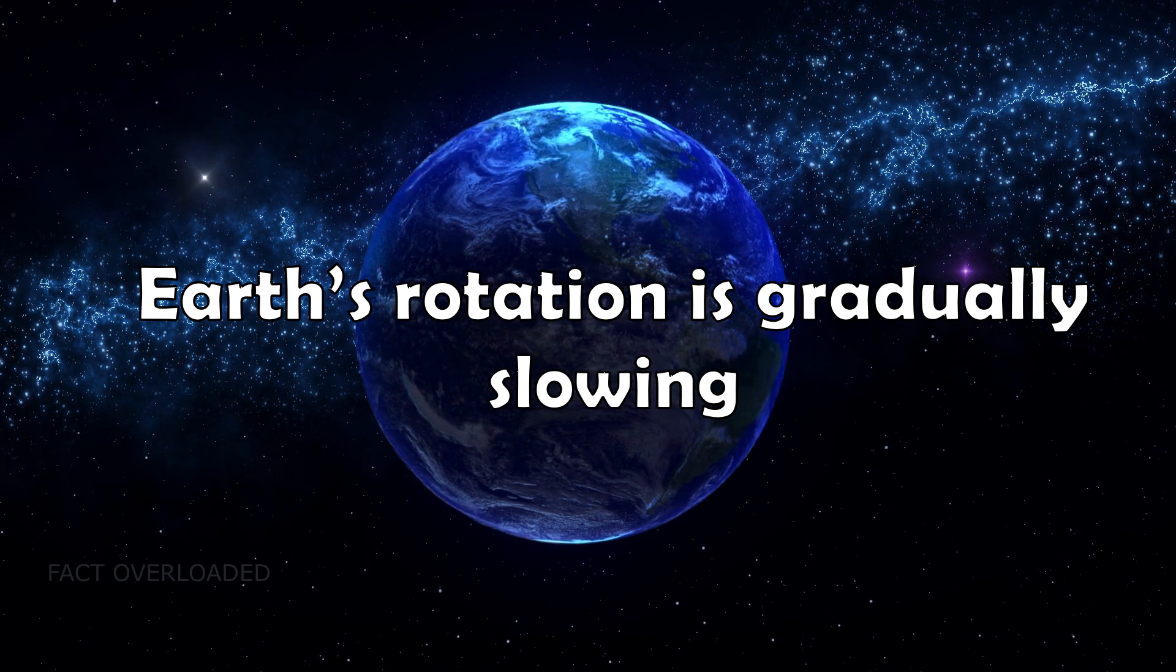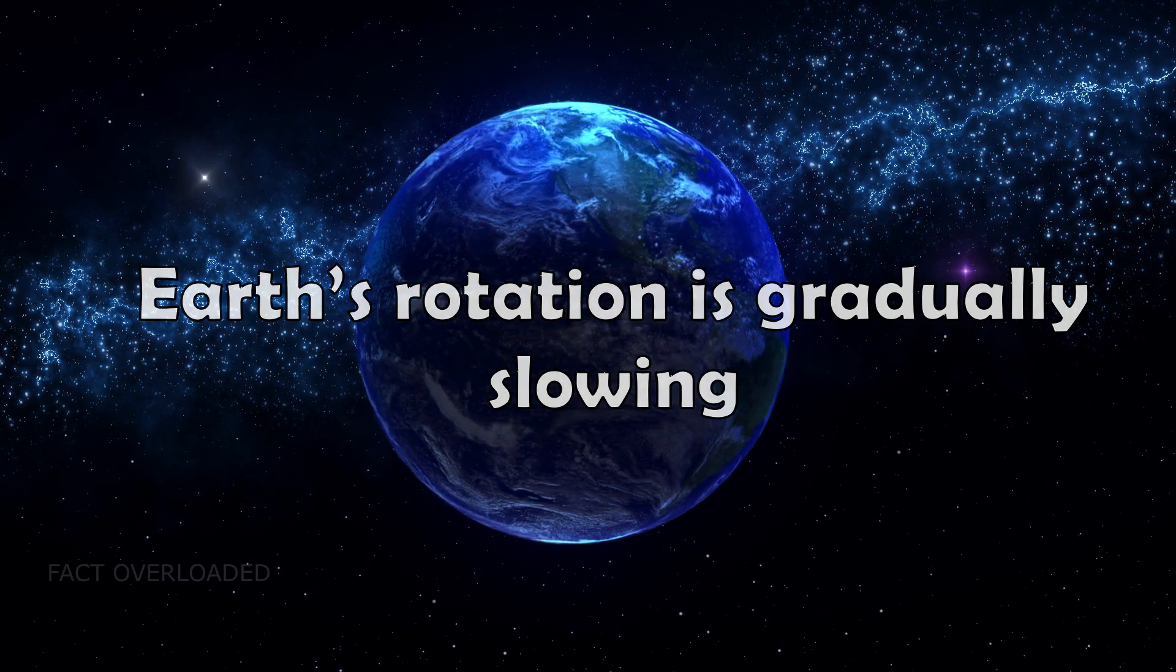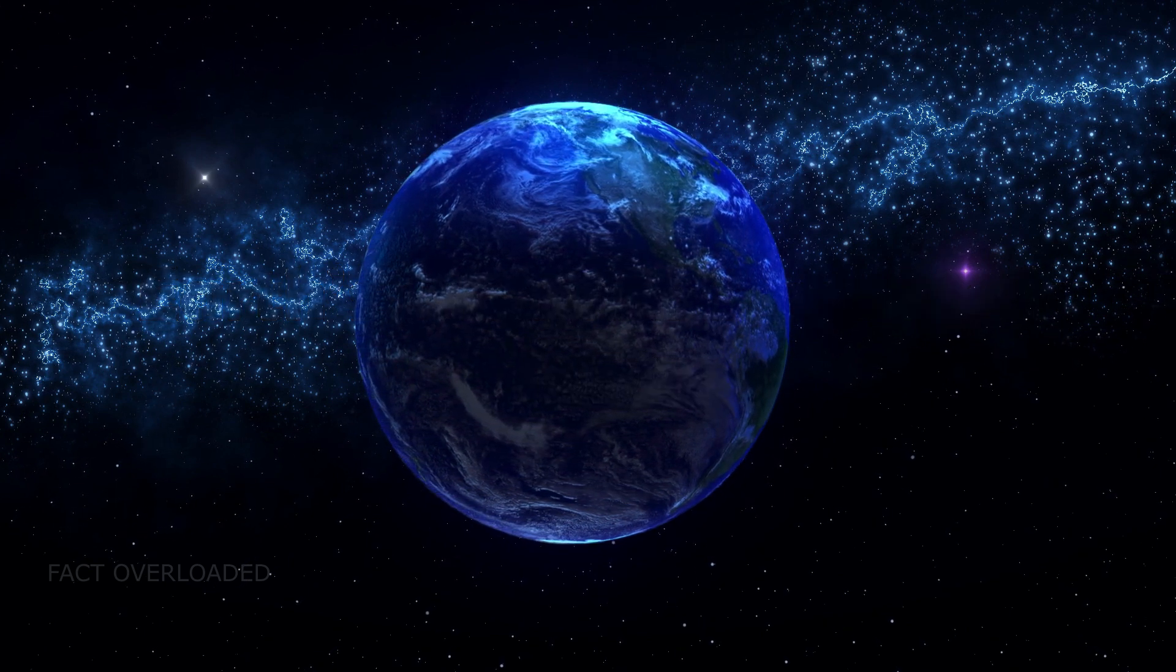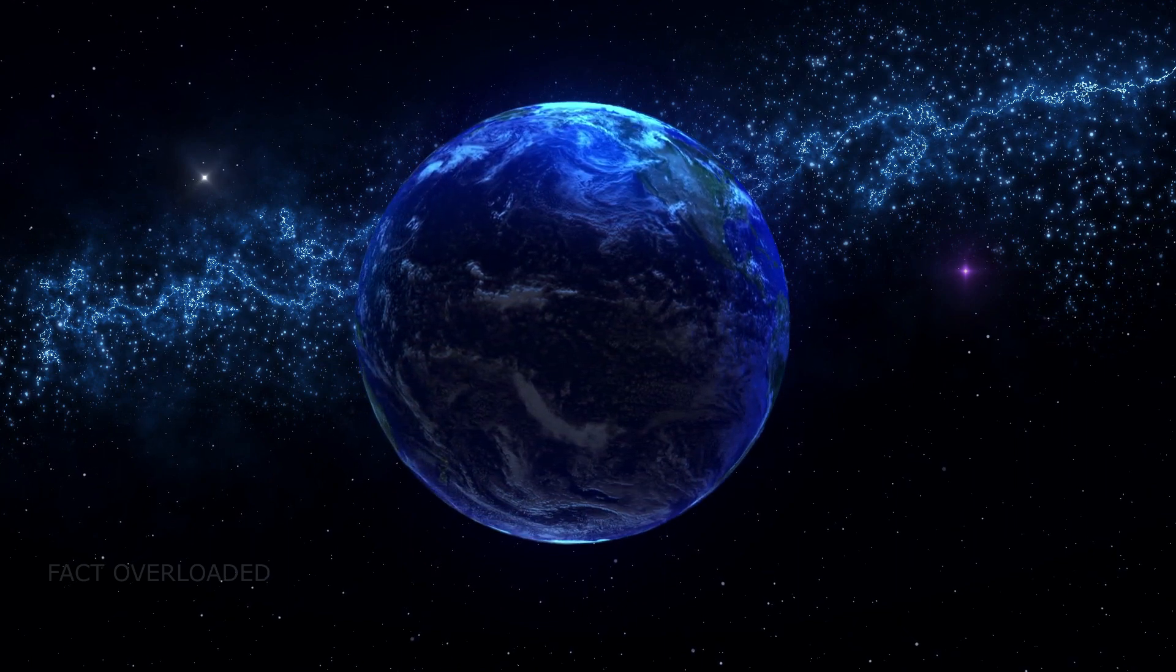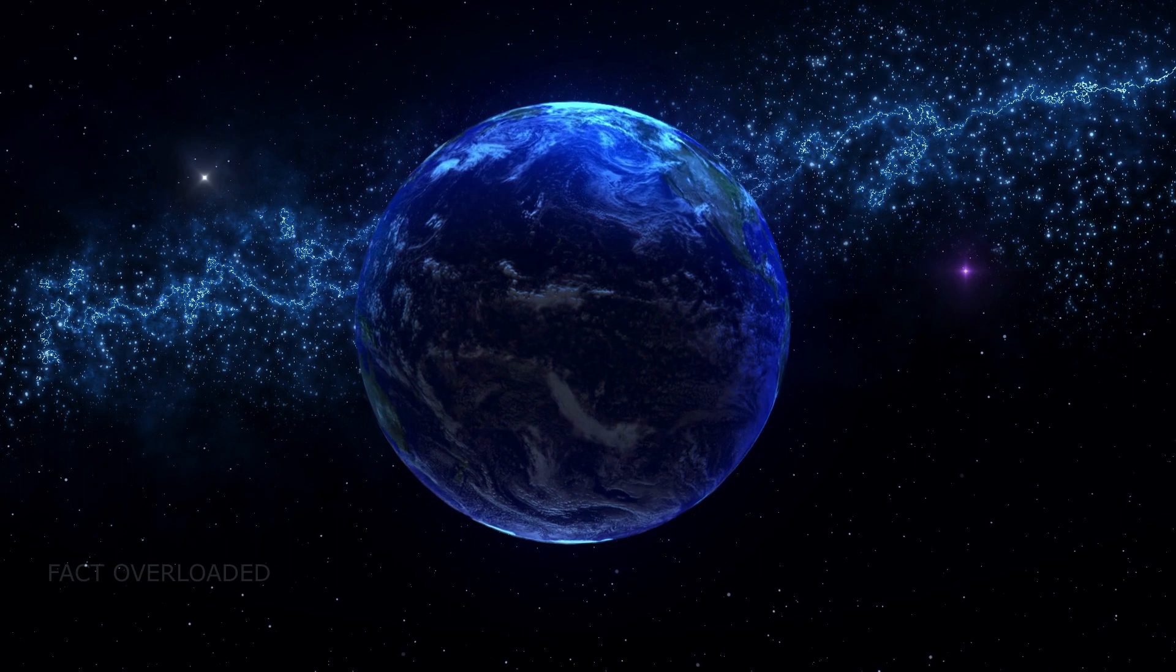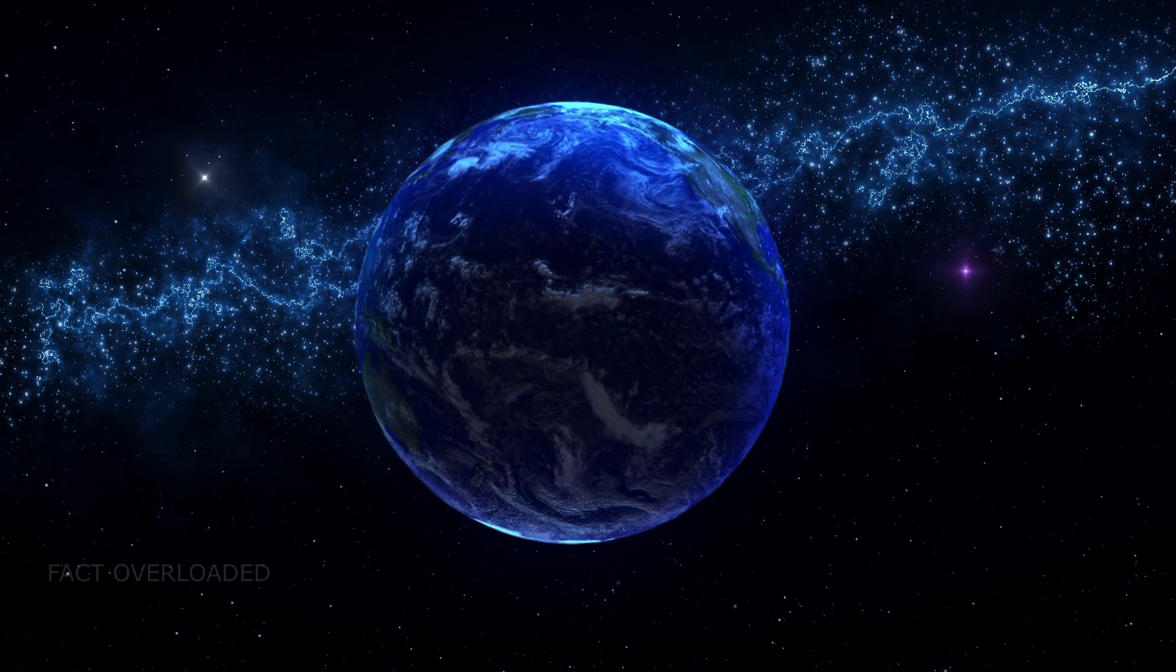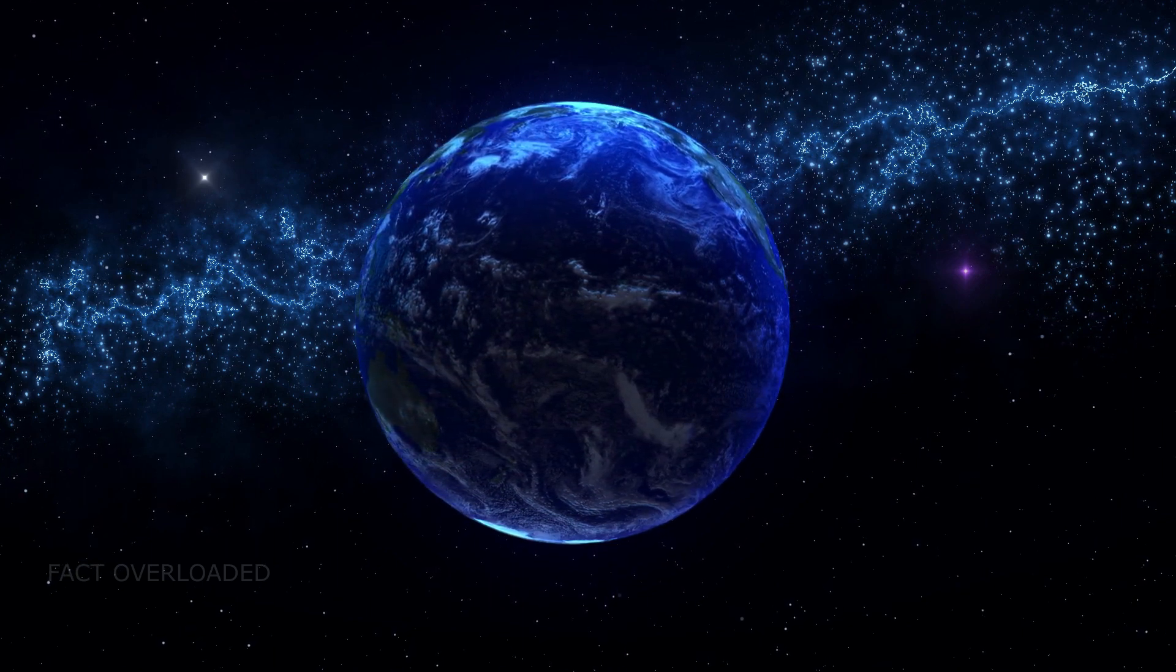Earth's rotation is gradually slowing. When I say Earth rotates about its own axis, what is new in it? All of us know that. But what makes you puzzled is that Earth's rotation is slowing down by a few milliseconds per day. This has a direct consequence on the lengthening of the day.